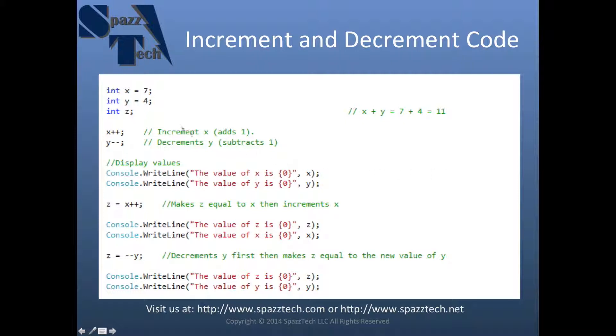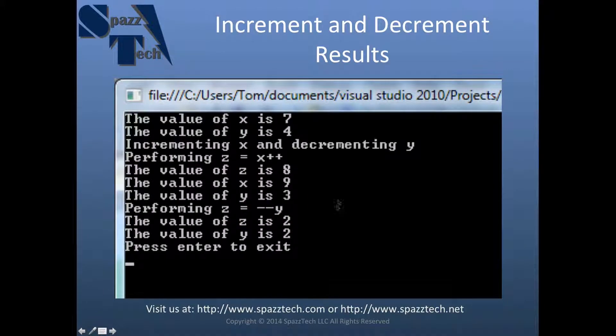So up here, x and y should be 8 and 3. And then we should see z equal to 8 and x equal to 9. And then we should see 2 and 2 down here. And when we run this code, it looks like this. And just like I described.